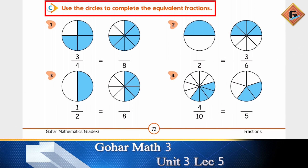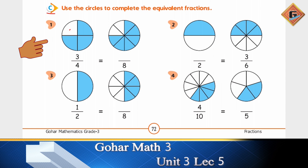Now move to the next question, Part C: use the circles to complete the equivalent fractions. For the first one, count the circles — there are 4 total and 3 are colored, so the fraction is 3/4. In the second group, there are 8 parts total and 6 are shaded, giving 6/8. We have completed this one. Now do the rest and check your answers from the screen.